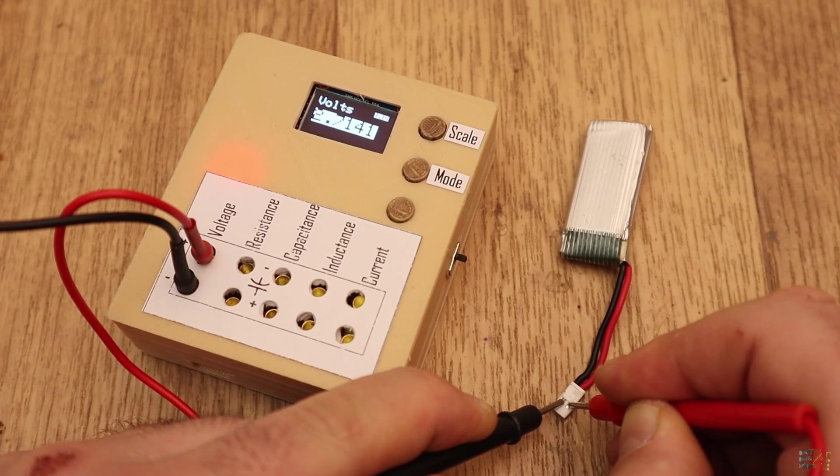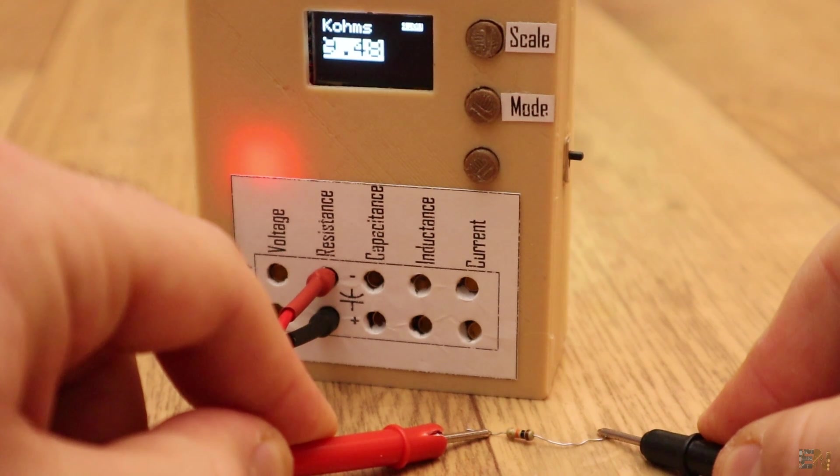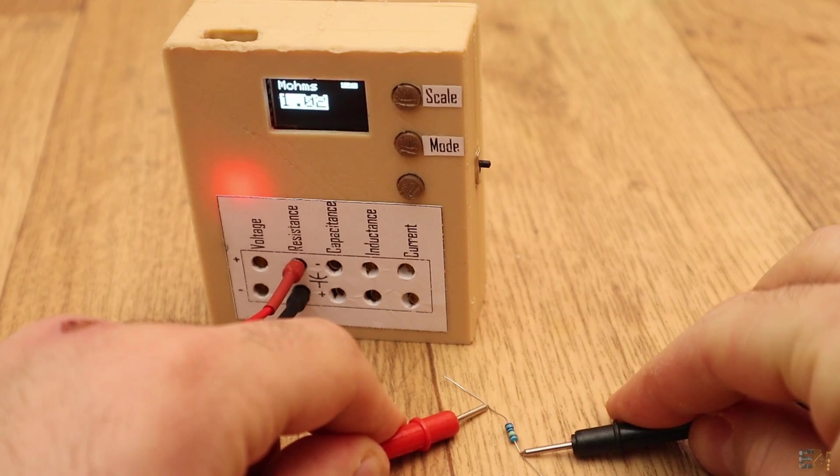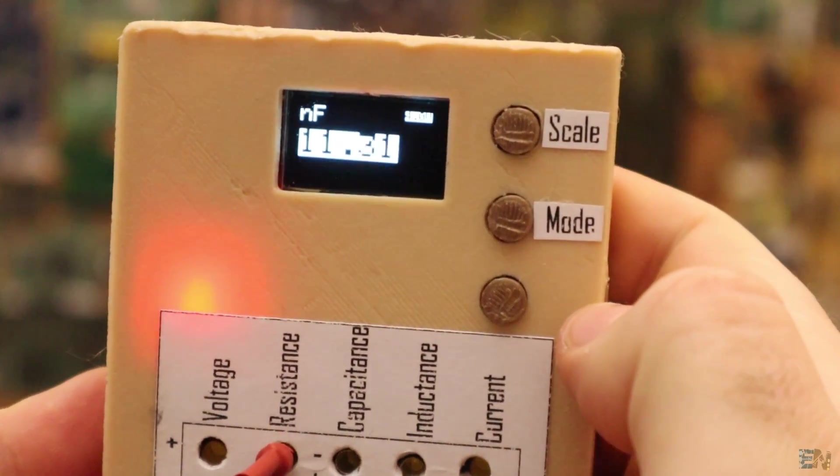The resistance value is measured using a voltage divider and three different scales for 4K, 200K and 4 mega ohms. The capacitance is measured using the time constant of a discharging process.